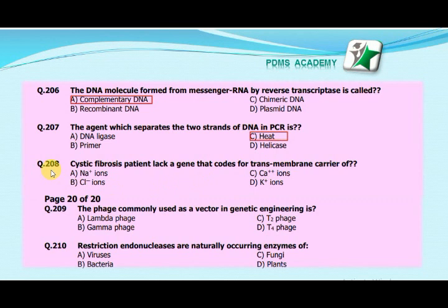The next MCQ is: Cystic fibrosis patients lack a gene that codes for the transmembrane carrier of — A. Sodium ions, B. Chloride ions, C. Calcium ions, D. Potassium ions. The correct answer is B. Chloride ions.